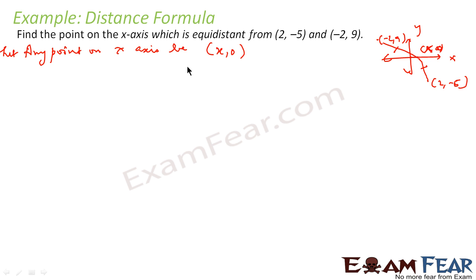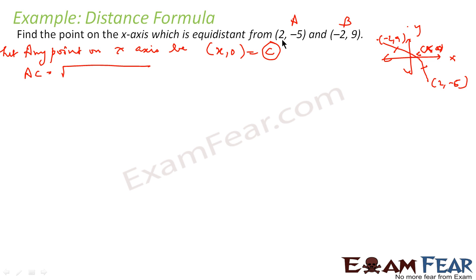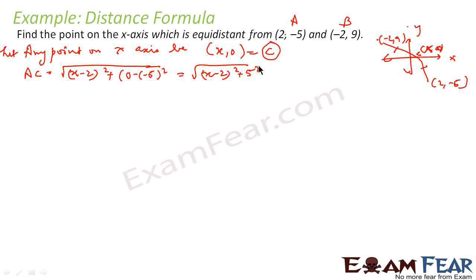Let this point (x, 0) be A, the point (2, -5) be B, and the point (-2, -9) be C. Let us find AC: AC = √((x − 2)² + (0 − (−5))²) = √((x − 2)² + 5²) = √((x − 2)² + 25).